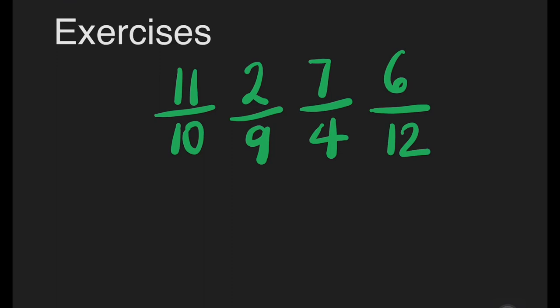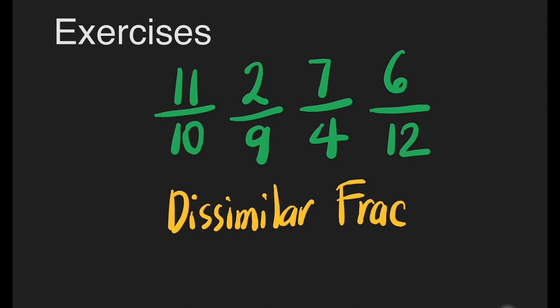We have another set of fractions here. 11 tenths, 2 ninths, 7 fourths, 6 twelfths. What fractions are they? Similar or dissimilar fractions? Yes, you get it right. The answer is dissimilar fractions.